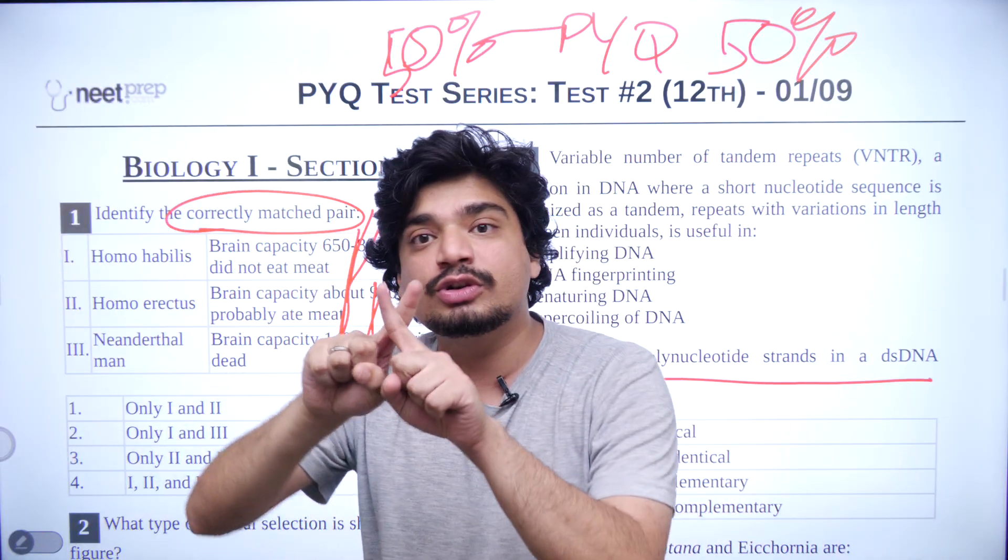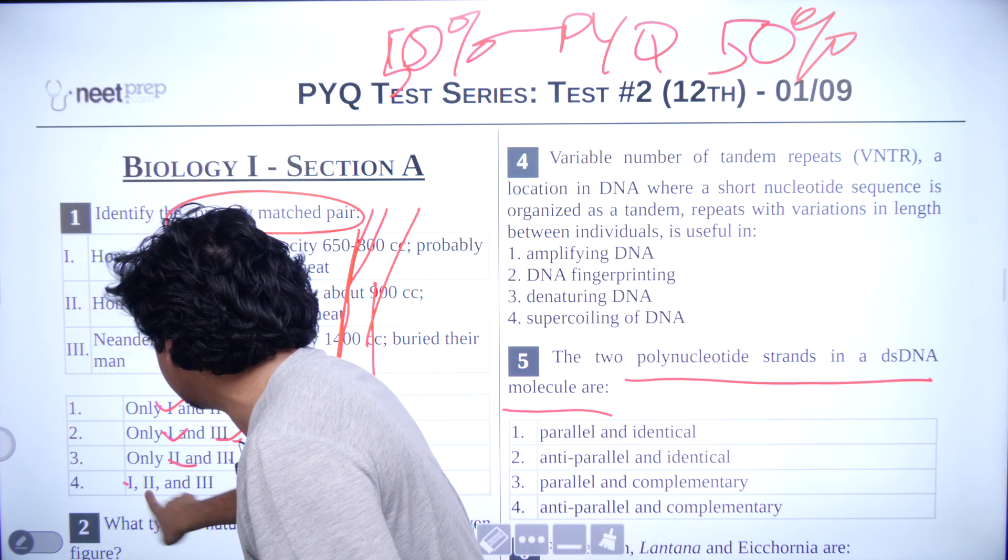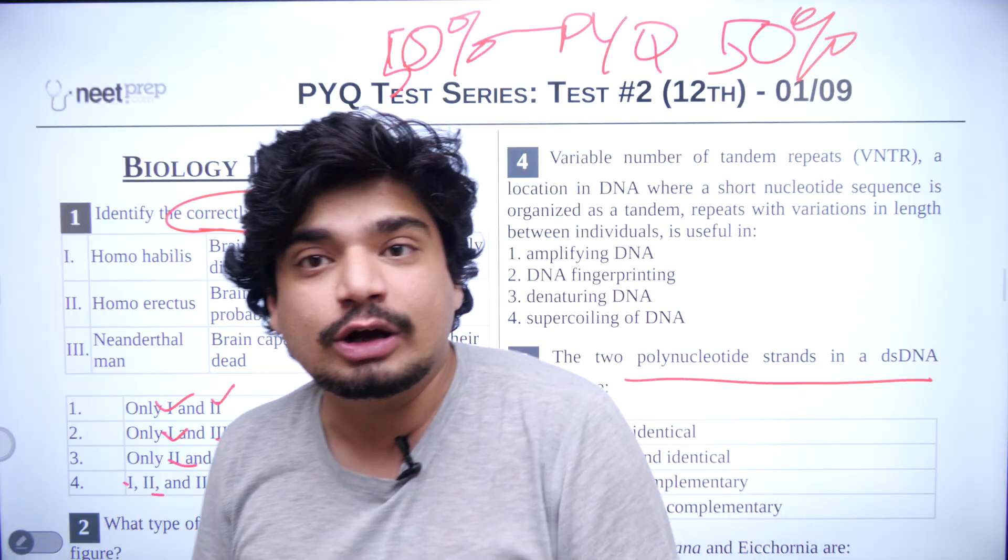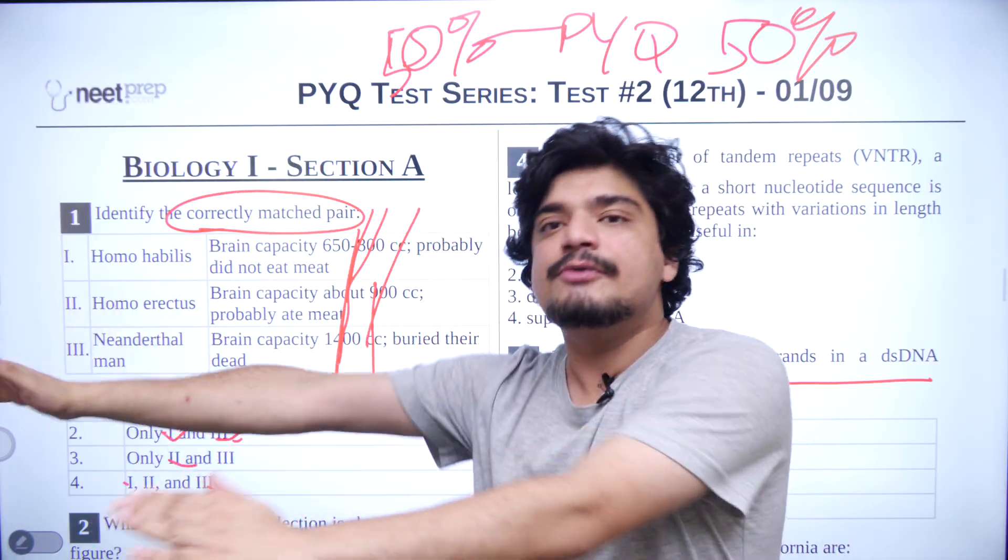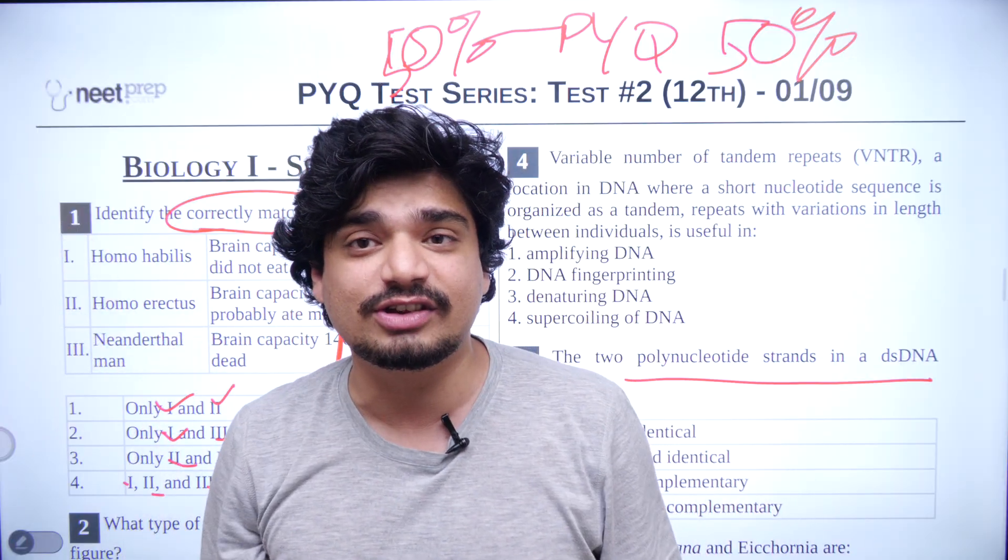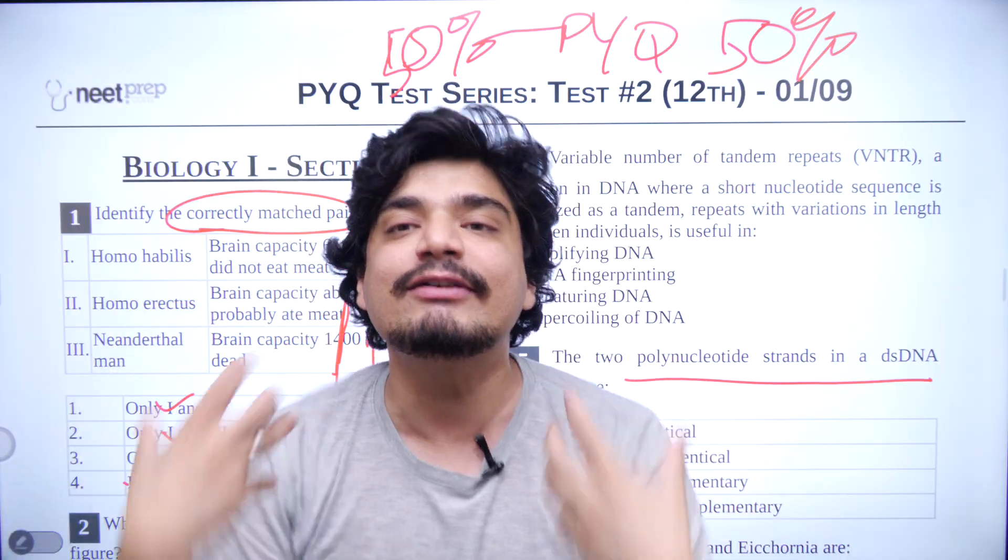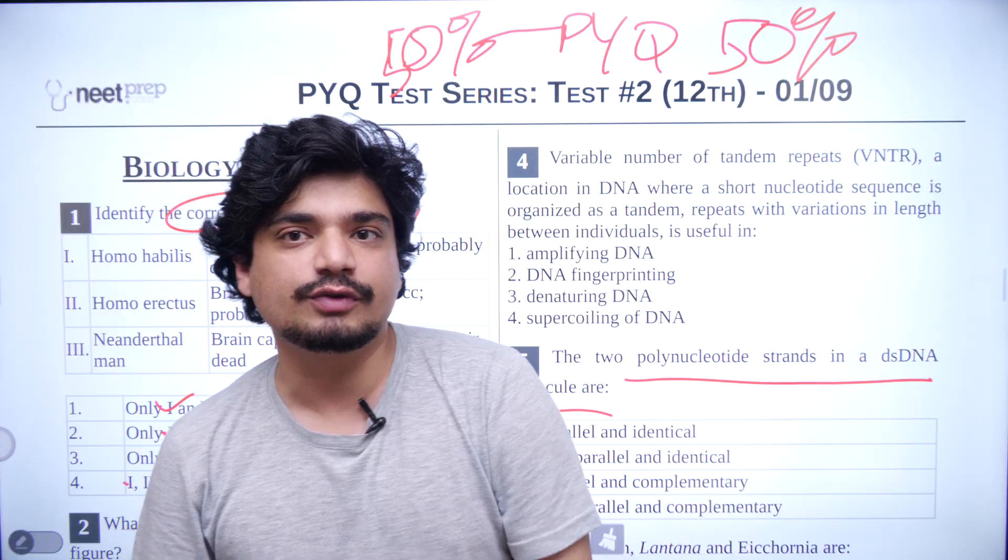Identify the correctly matched pair. They won't give you just one correctly matched pair. One and two, one and three, two and three, one, two, three. The multiple choice correct options kind of question that are now being asked in NEET examination. So questions will be very similar to previous year question. 50% will be previous year question. So your previous year question practice gets done through this test series. And 50% are going to be very, very similar to the previous year question. So this is the reason this test series is going to be beneficial for you.